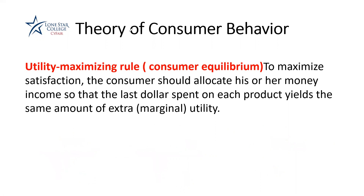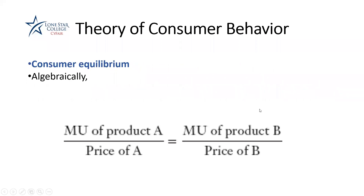You can expand this formula. For example, you should also equalize this ratio with marginal utility of education divided by price of education, and so many other goods and services you consume. The formula is: MU_A / P_A = MU_B / P_B. In reality we consume more than two products, so you can definitely expand this formula. This is the consumer equilibrium or the utility maximizing rule.